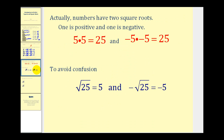Now there's one more thing we need to discuss. Numbers actually have two square roots. If I asked you what are the square roots of twenty-five, we can obtain twenty-five from the product of positive five times positive five, and also from negative five times negative five. So the square roots of twenty-five are positive five and negative five. However, to avoid confusion, when we want the positive square root of a number we use the notation called the principal square root, and if we want the negative square root we put a negative in front of the square root symbol.